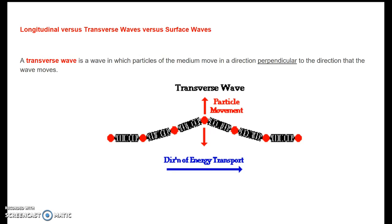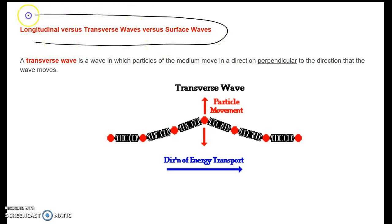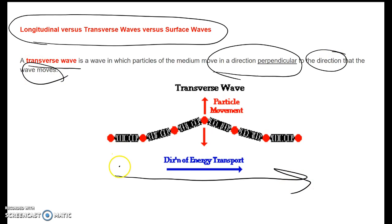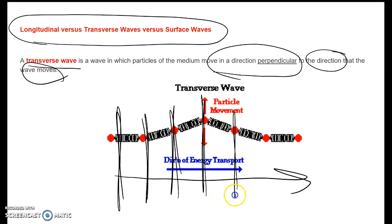After the slinky simulation, hopefully you had an idea of what was going on. Now let's look at longitudinal, transverse, and surface waves — the different types of waves. A transverse wave is where the particles move in a direction perpendicular to the direction that the wave moves. So the waves move this way, but the particles move up and down. They move at right angles, or perpendicular — particles move up and down while the wave transfers energy perpendicular to that particle motion.